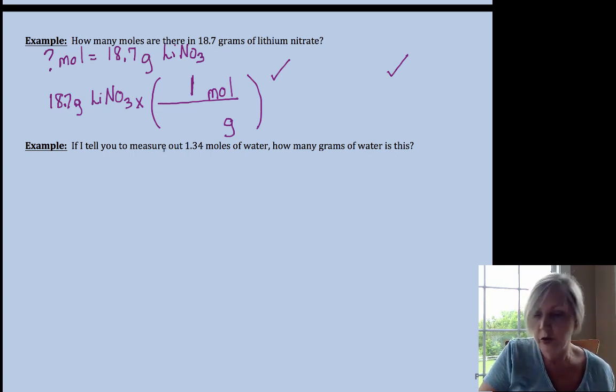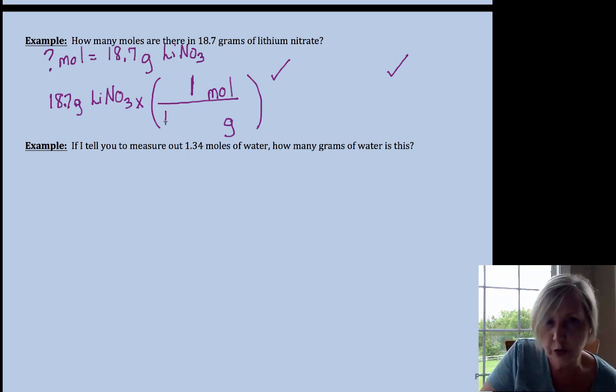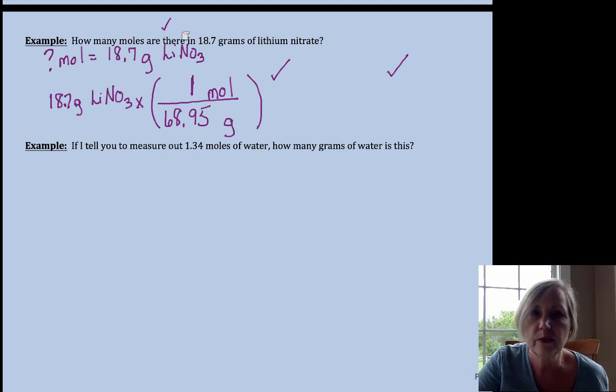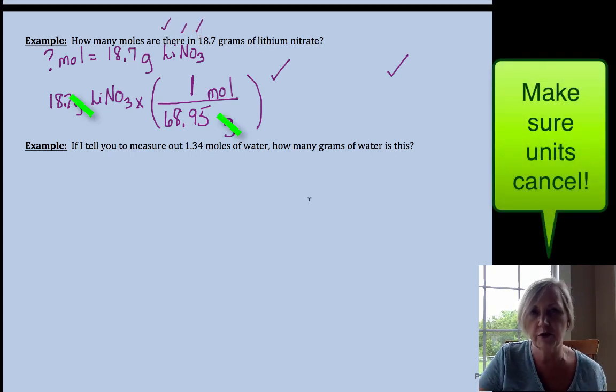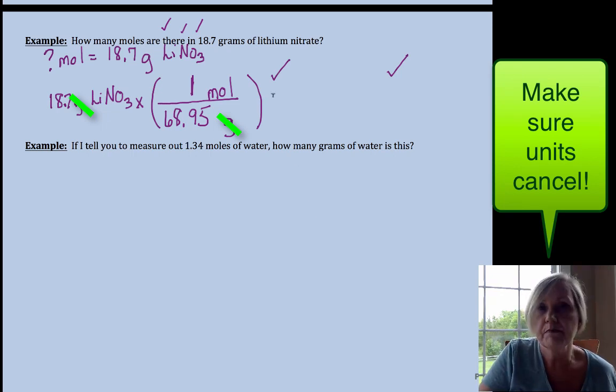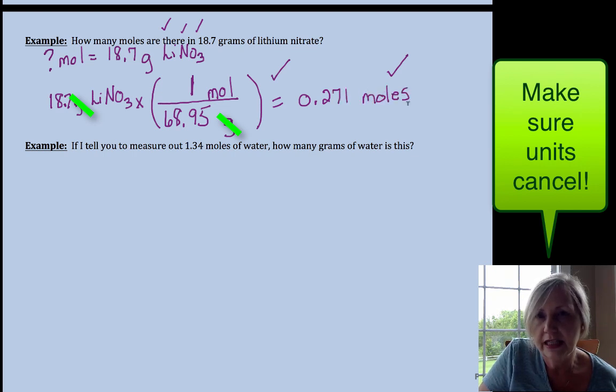And the molar mass tells us for every one mole, if you do the calculation—I'm going to assume you know how to do that for the sake of this video—68.95 grams is one mole. That's one lithium, one nitrogen, and three oxygens from the periodic table. All right, if you perform that division, you get 0.271 moles of lithium nitrate.